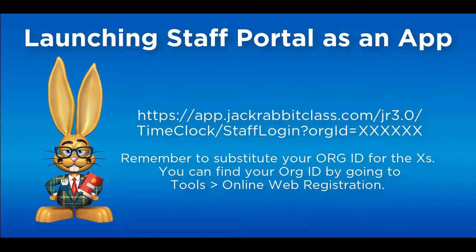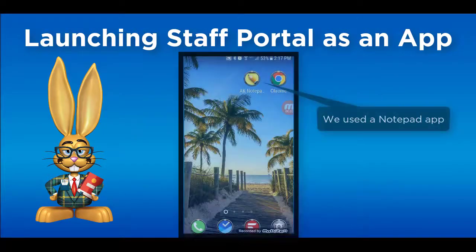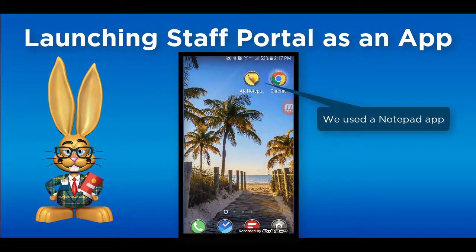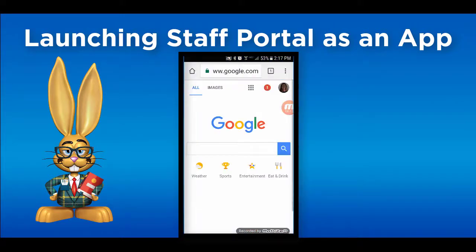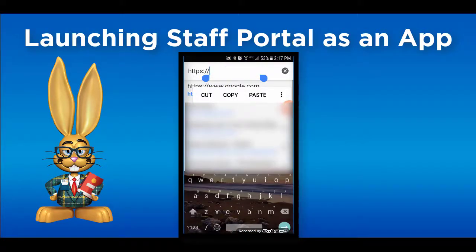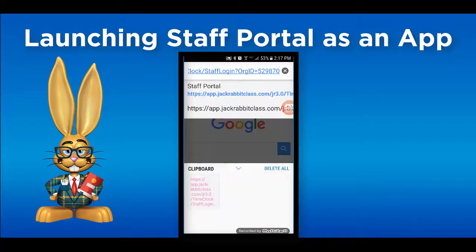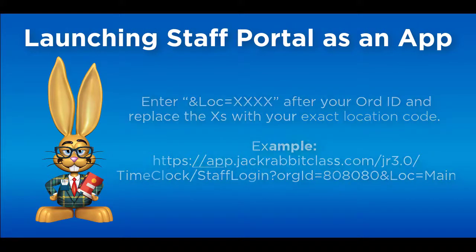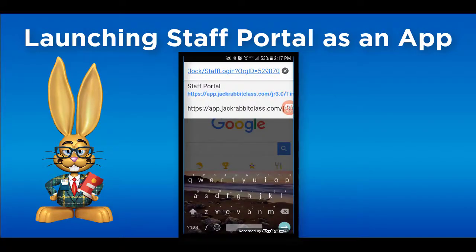To set up your Staff Portal as an app, you will need to enter this code in the browser on your device. We found it easier to do if you can add it to your clipboard first. Next, open a browser. For iOS devices including iPhones and iPads, open the Safari browser. Android devices should open Chrome. Next, enter the code and replace the X's with your org ID if you haven't already done so. If you have more than one location, you can specify a particular location to launch for the Staff Portal when you launch it remotely. You should now be at the Staff Portal Login screen on your device.